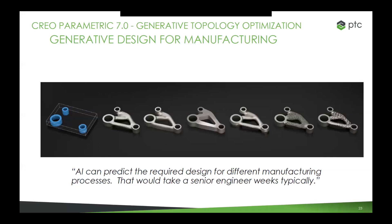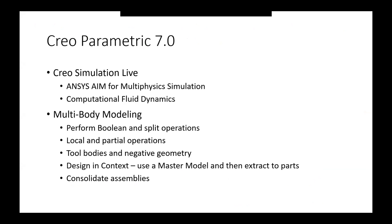Those were some of the big PTC happenings in 2019. In April, PTC will release Creo Parametric 7.0. Here are some things we know: generative design — PTC acquired Frustum in 2018, and generative design is the application of machine learning and artificial intelligence to the design process. Creo Parametric 7.0 also adds ANSYS AIM capabilities for multi-physics modeling, including computational fluid dynamics with Creo Simulation Live. Also in Creo 7.0, we get multi-body modeling — people have been asking for multi-body for years, so this will be highly appreciated by customers.